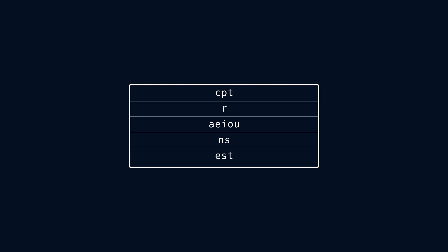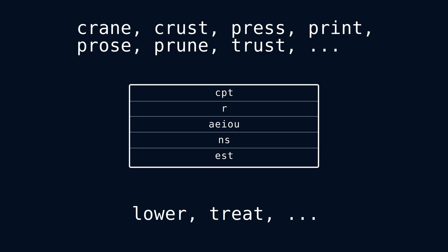So how do we represent these cuts? Here's an example subspace that we might have. There are five slots, each of which has a set of possible letters. The first letter can be C, P, or T. The second letter can only be R, and so on. Here are some example words that fall within this subspace, and here are some words that don't. Lower fails to match on any slot at all, and treat fails to match on the fourth slot.